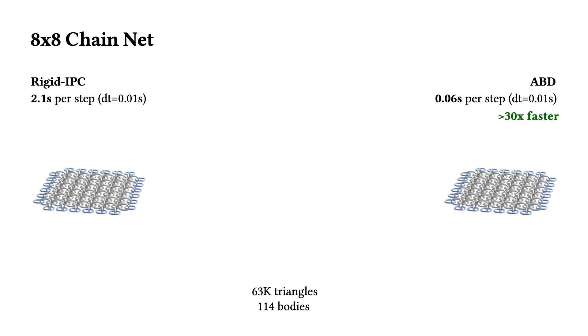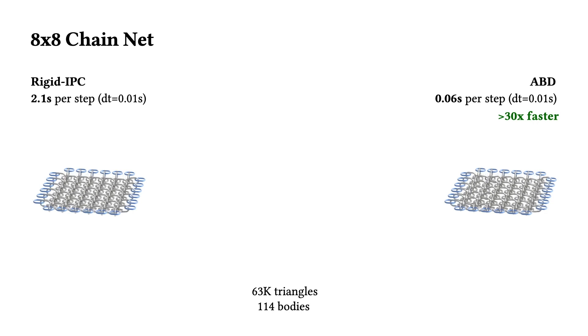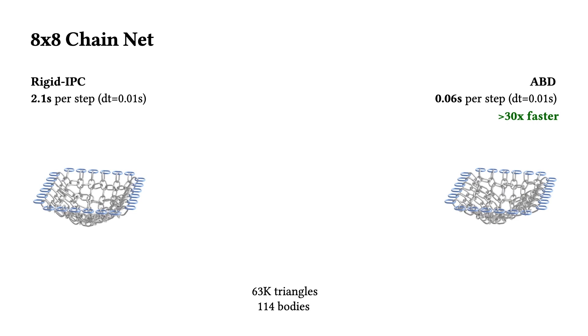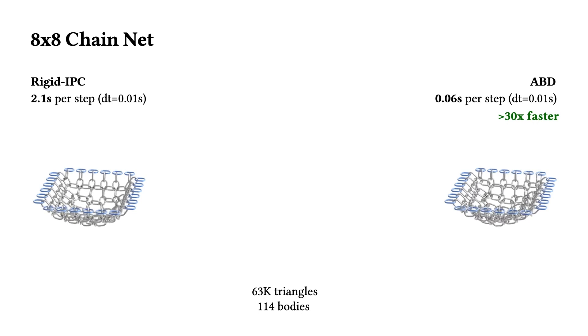To study the scalability of ABD, we start with the 8x8 chain net example. On the left, we again have the rigidIPC results, while on the right, ABD comparably models the shocks in the dropped chain links with interpenetration-free contacts. Here, we see a 30 times faster performance for ABD on this small-scale example.